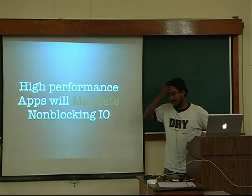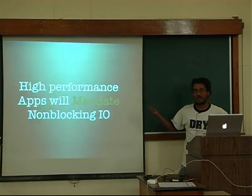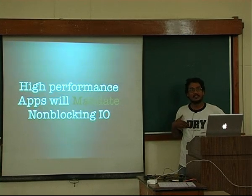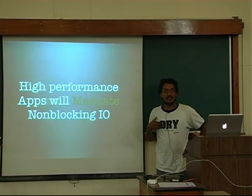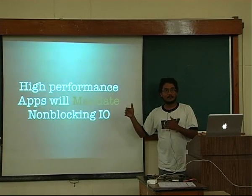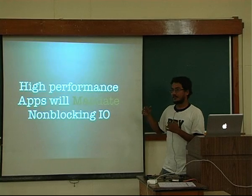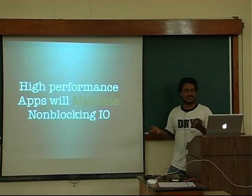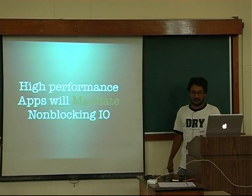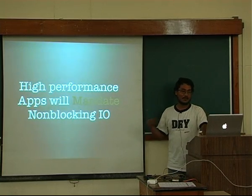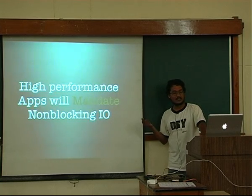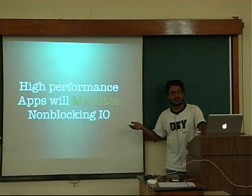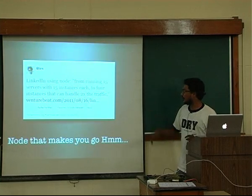If you want to scale your servers, you have to use non-blocking. Google actually targets 80% CPU utilization in its data center — from 10 to 80 is a big jump. The only way you can do it is not by using blocking calls in Ruby, Rails, or whatever. There's a big move towards non-blocking for anybody doing high performance apps, whether it's Ruby Event Machine or Node.js.